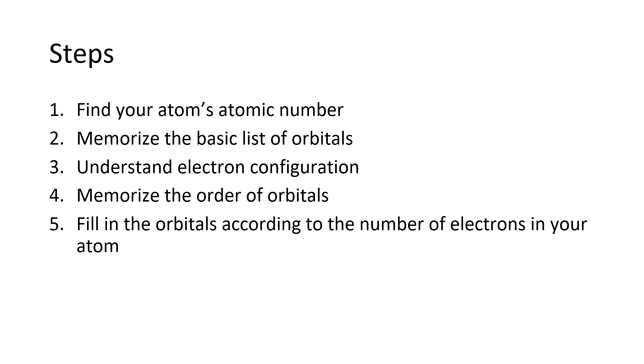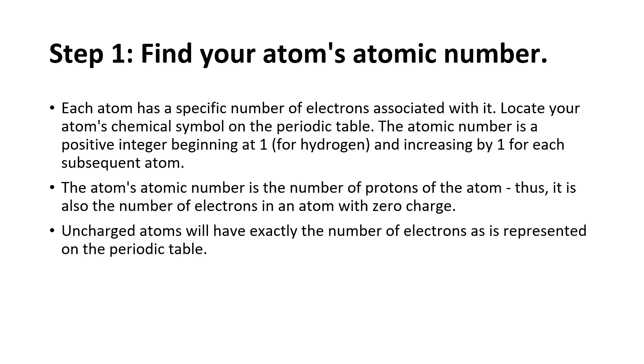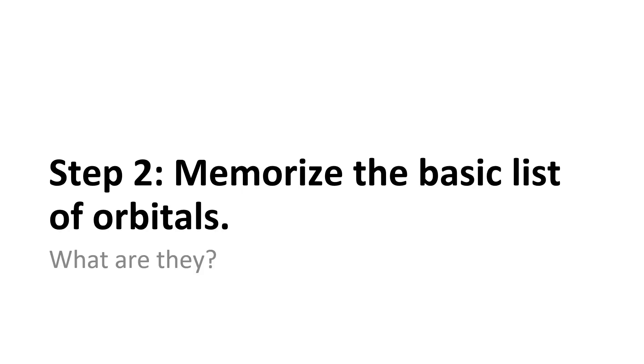So how do you figure out what is the electron configuration? You have to find your atom's atomic number and memorize the basic lists. Understand electron configuration, memorize the order of orbitals, and then fill in the orbitals according to the number of electrons in your atom. So finding your atom's atomic number—the atomic number deals with the number of protons. But if we're dealing with uncharged atoms or stable neutral atoms, the number of protons would equal the number of electrons. So when you do that, you can figure out the configuration. But remember the basic list of orbitals, how it goes: S, P, D, then F.